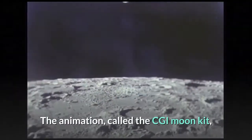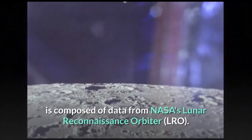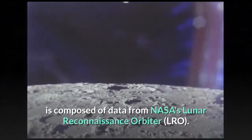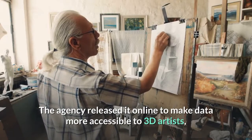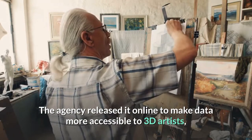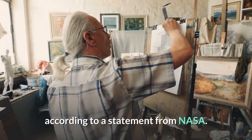The animation, called the CGI Moon Kit, is composed of data from NASA's Lunar Reconnaissance Orbiter, LRO. The agency released it online to make data more accessible to 3D artists, according to a statement from NASA.